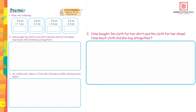Hinna bought 3 meters of cloth for her suit and 4 meters of cloth for her shawl. How much cloth did she buy altogether? 3 meters plus 4 meters equals 7 meters of cloth.